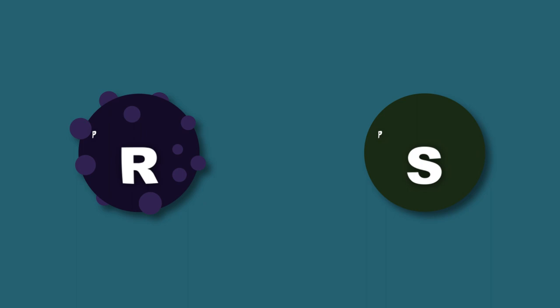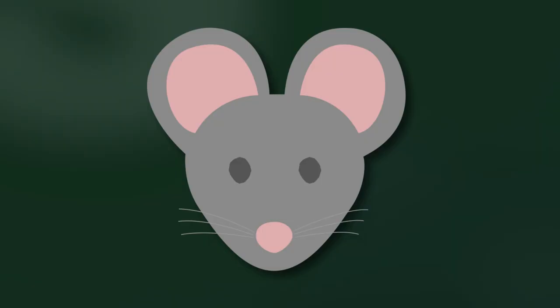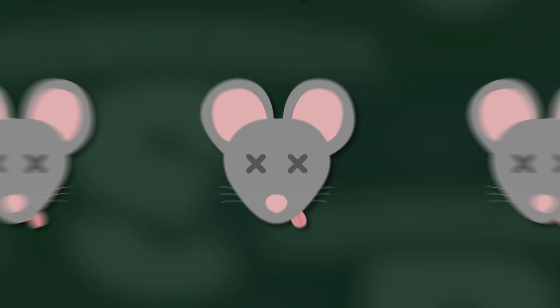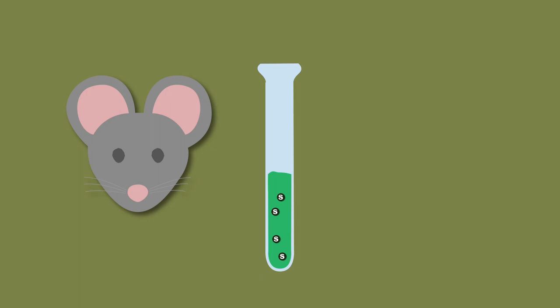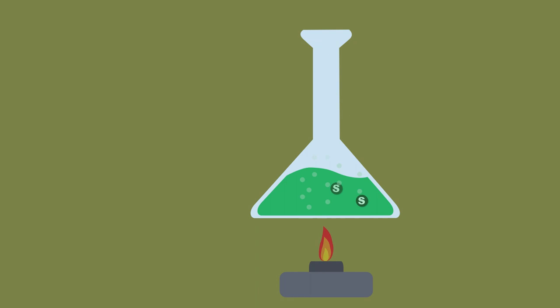He found two strains: one smooth, or S strain, which was lethal to mice, and one rough, or R strain, which was not. After many failures and mice, Griffith prepared an injection of the lethal S strain, which ordinarily would kill the mouse. But before he injected it, he exposed it to heat, which killed the pneumococcus bacteria inside — but this time did not kill the mouse.